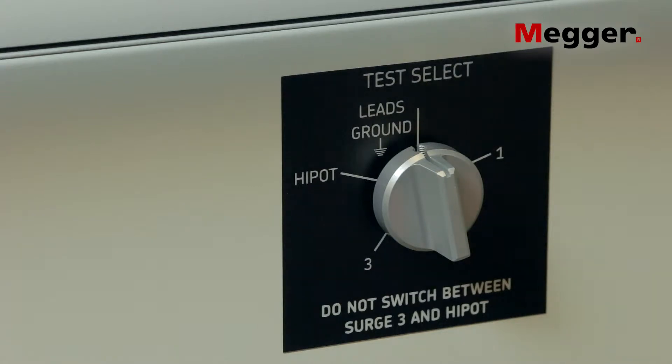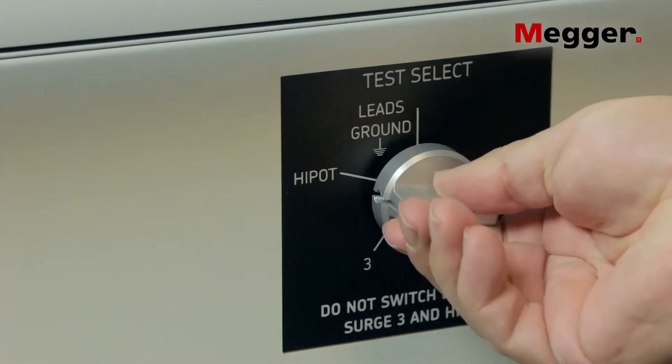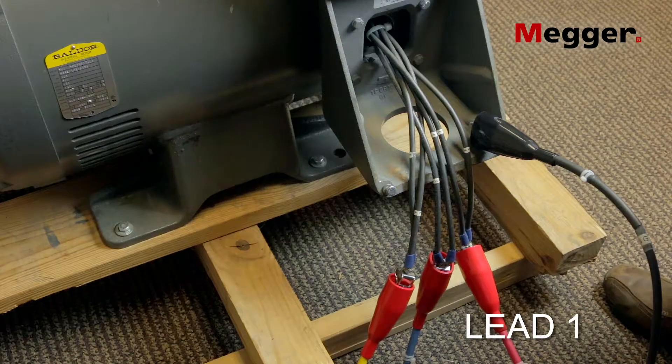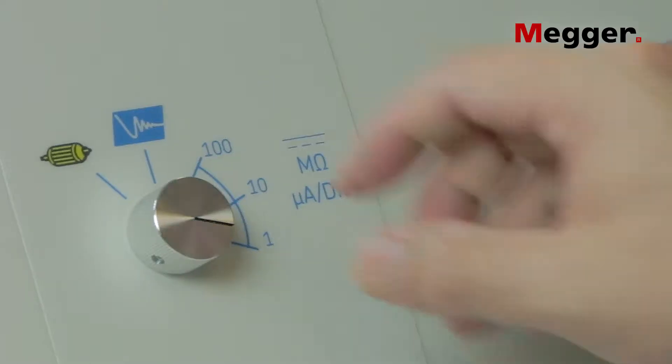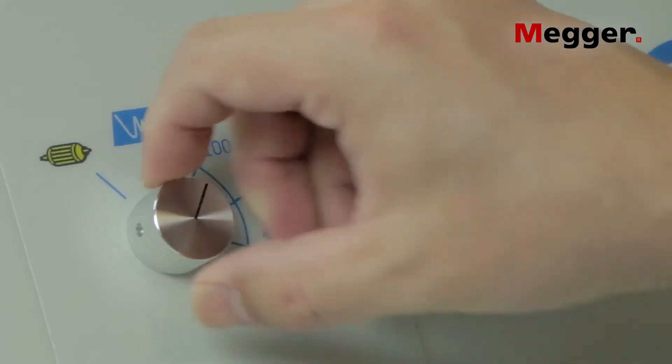Turn the test selector switch to the high pot position. It is important to note that only lead one will be energized during the high pot test. Turn the power pack's function switch to the 100 microamps per division position.